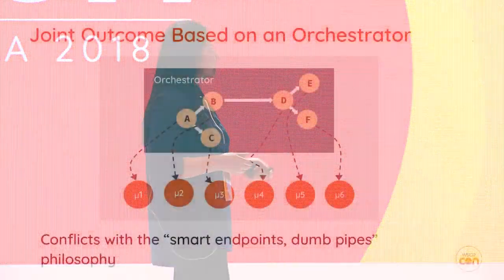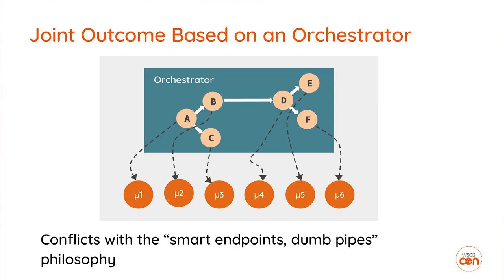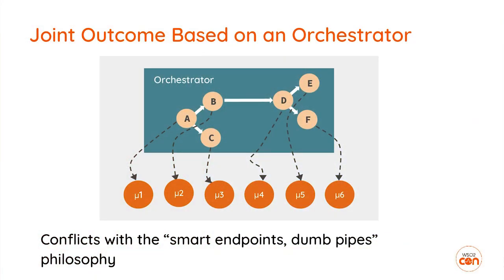There are two approaches to solve this problem. One is a joint outcome based on an orchestrator, and the other is a joint outcome based on a coordinator. With an orchestrator, there is a single central component responsible for handling the entire transaction flow. The problem is this goes against the philosophy of microservices — smart endpoints and dumb pipes — because we've introduced a central smart process and moved smartness away from the microservices themselves.